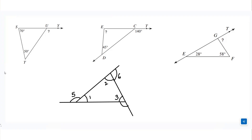Hello everyone. Today we will learn about exterior angles of a triangle. I will explain various kinds of questions, simple to complex, to understand every concept related to this topic. So do not skip the video — stay till the end. The exterior angle of a triangle is always equal to the sum of the two opposite interior angles.